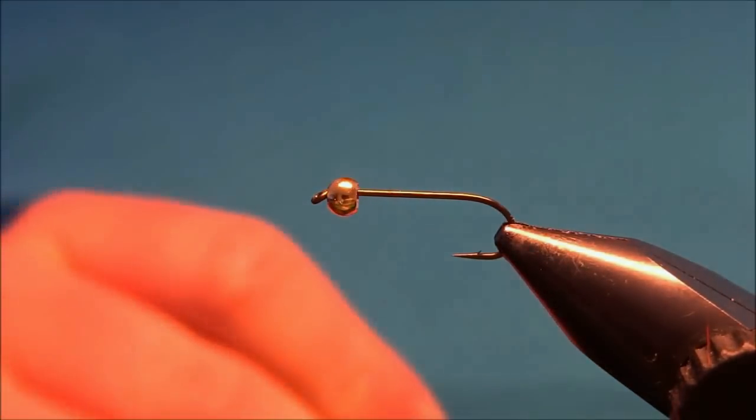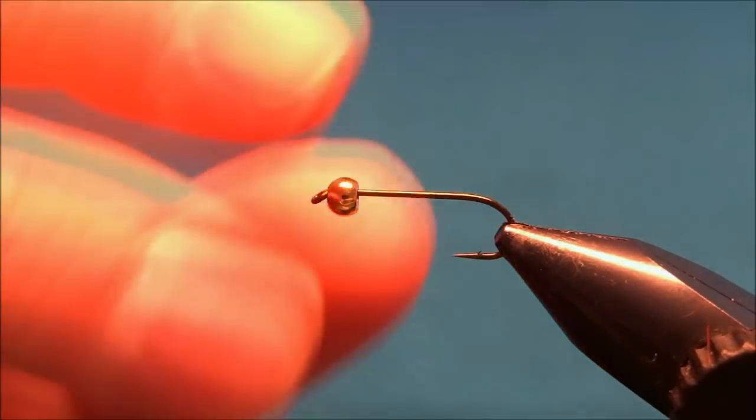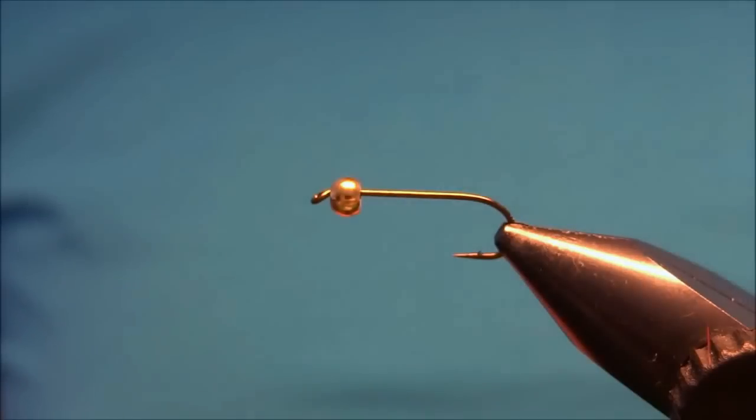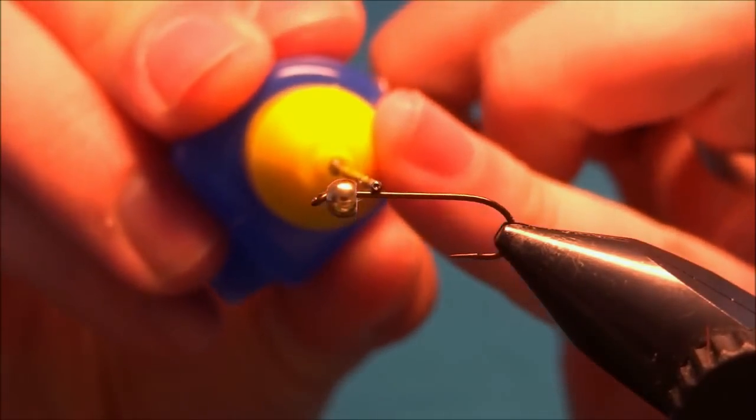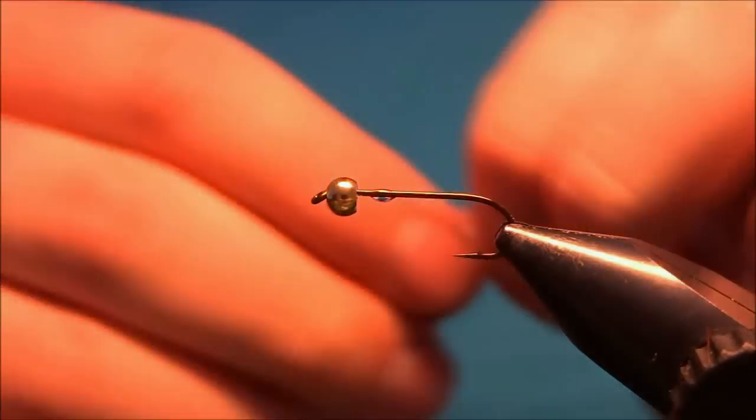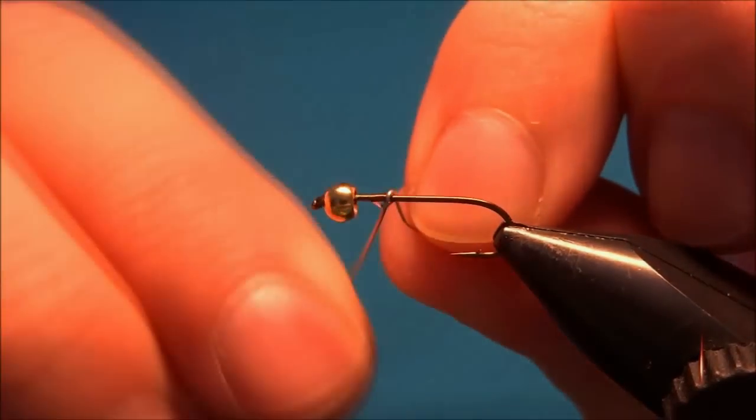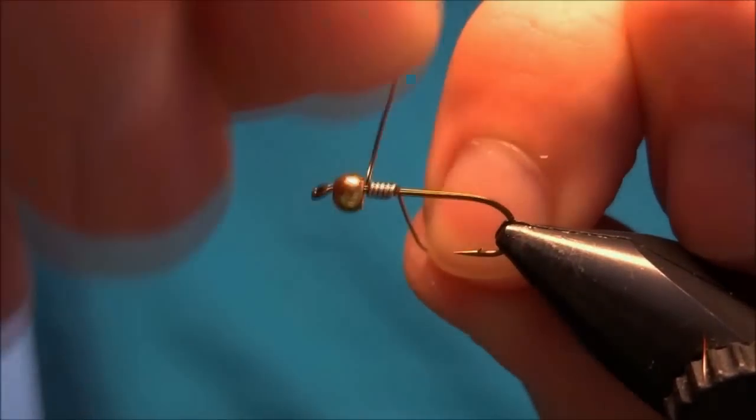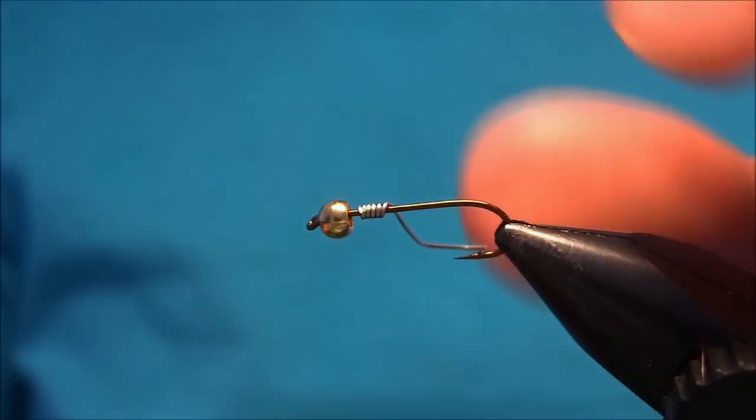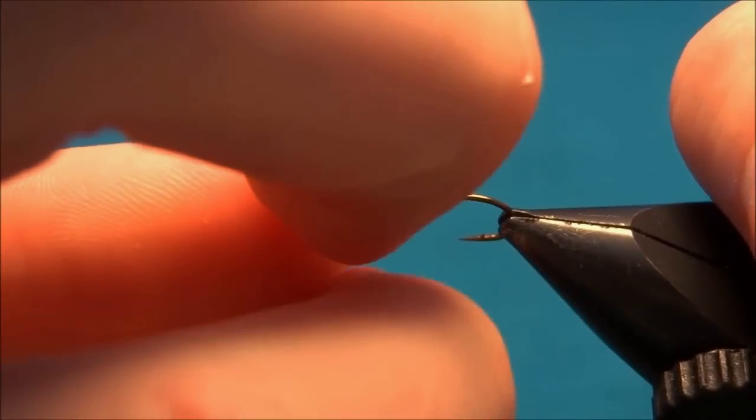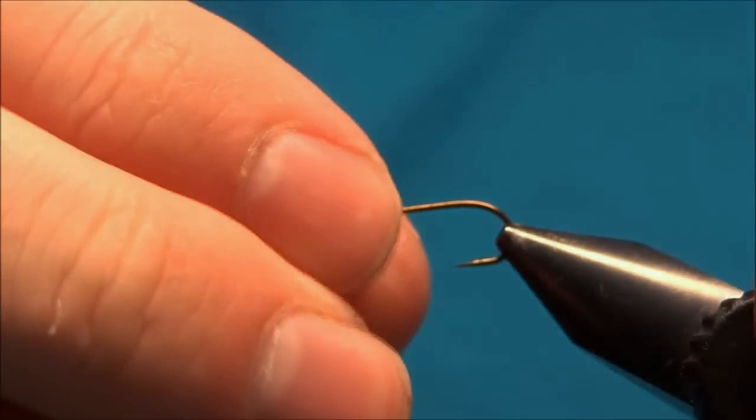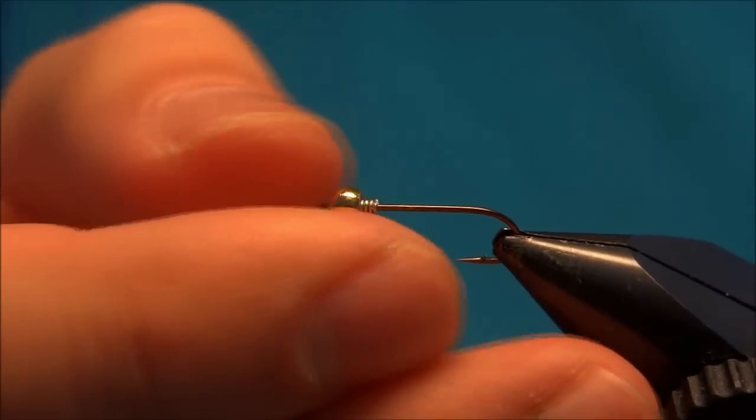The hook I'm using is a nymph hook three times longer than normal, size 12. I've already put a golden bead on, and to secure the bead so it doesn't move when we tie the fly, I usually put three or four turns of small wire. This will keep the bead in place.